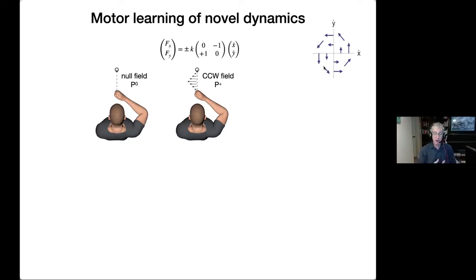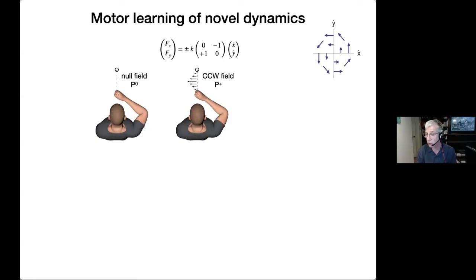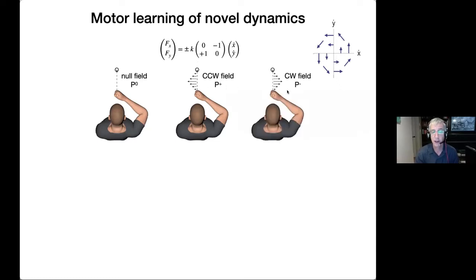Using the robots, we can give you experience which we can be pretty much certain you haven't had outside the lab. Whereas if we gave you an object or tool, you may well have seen that sort of object outside the lab. So this is going to perturb people — we call it P plus — and we can also apply the same perturbation with the gain sign-changed so it applies in the opposite direction, which we'll call P minus.